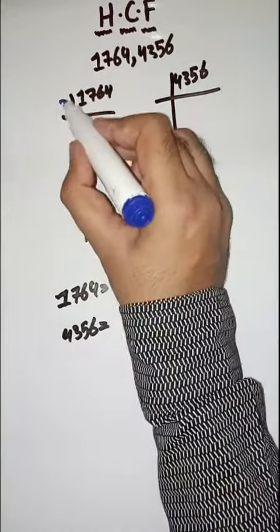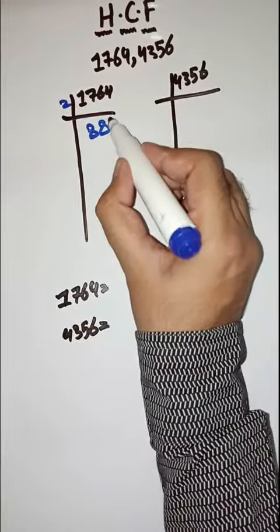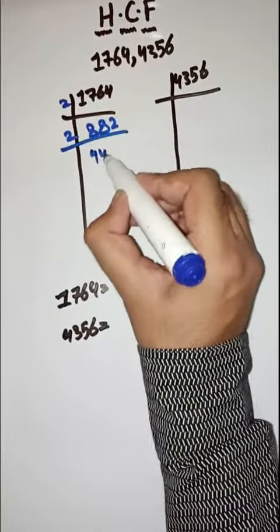Prime factors of 1764. We will start with 2. Dividing repeatedly by 2: 882, then 441, then 220, continuing with 2.